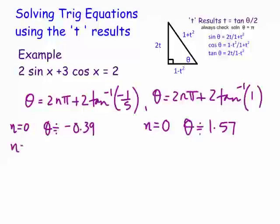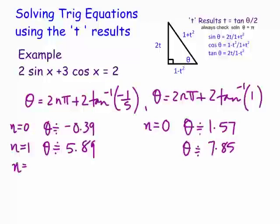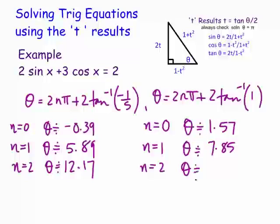For n = 1 in the first stream, we get approximately 5.89. In the second stream with n = 1, θ is approximately 7.85. For n = 2 in the first stream, θ is approximately 12.17, and in the second stream n = 2 gives θ approximately 14.14.